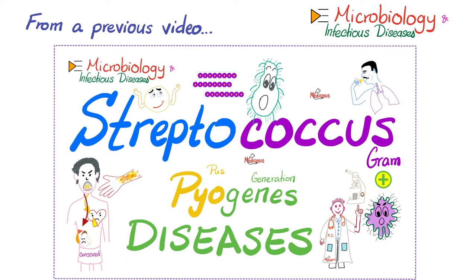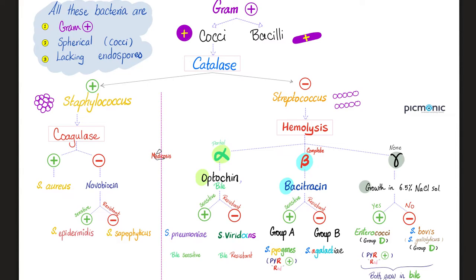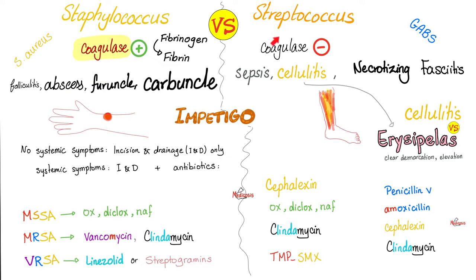Let's review streptococcus pyogenes. It's a gram-positive coccus, catalase-negative, beta-hemolytic, and bacitracin-sensitive. Streptococcus pyogenes is coagulase-negative, which means the area of infection will be widespread — unlike staph, which is coagulase-positive, so the area of infection will be localized and coagulated in a narrow area.